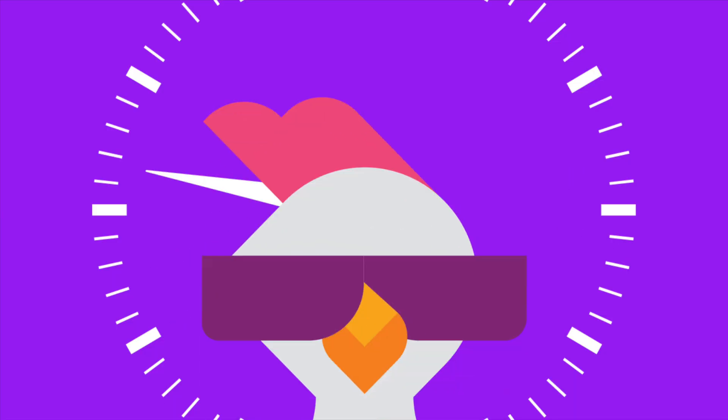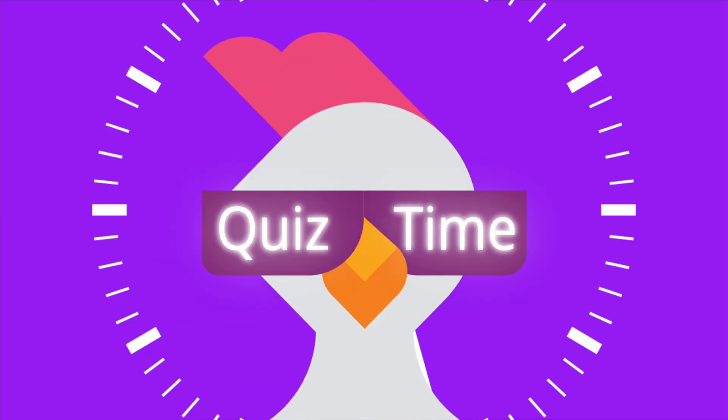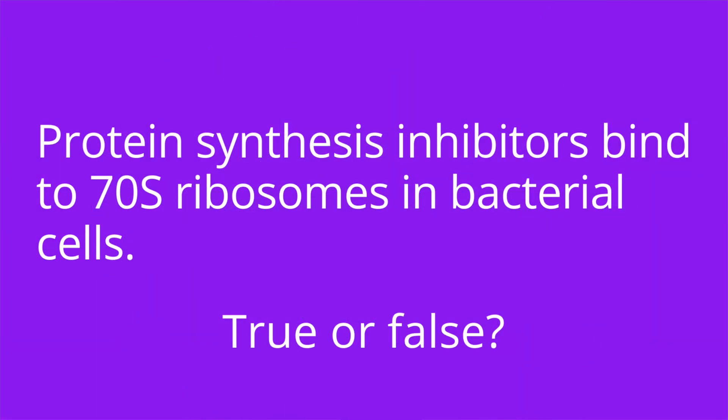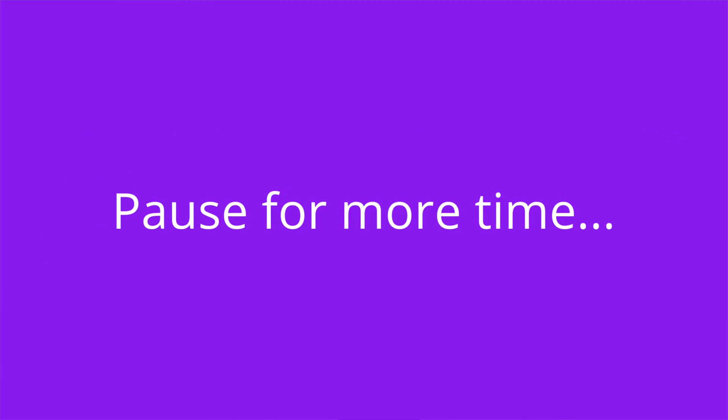All right, it's quiz time and I have three questions for you. Question number one: protein synthesis inhibitors bind to 70S ribosomes in bacterial cells — true or false? The answer is true.